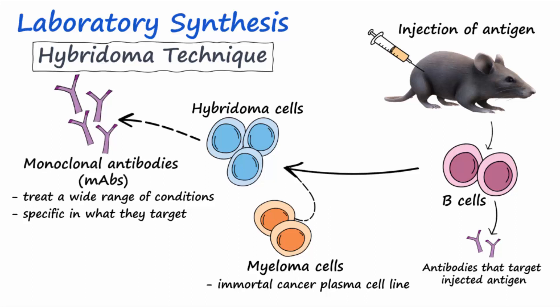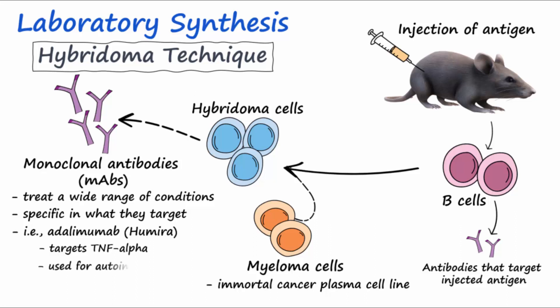An example of a monoclonal antibody is adalimumab, which targets the pro-inflammatory cytokine TNF-alpha. It is used for autoimmune diseases such as rheumatoid arthritis, psoriatic arthritis, and inflammatory bowel disease.